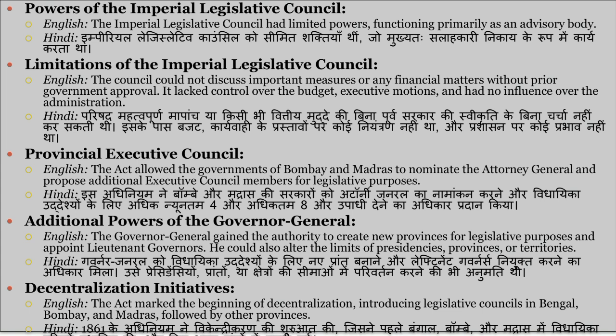The Governor General gained the authority to create new provinces for legislative purposes and appoint Lieutenant Governors. He could also alter the limits of Presidencies, Provinces, and Territories. Governor General ko vidhayi uddeshyon ke liye nai pradesh banane aur Lieutenant Governors niyukt karne ka adhikar mila. Unhe Presidency, Prantho, aur Kshetron ki seemao mein parivartan karne ki bhi anumati thi.